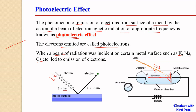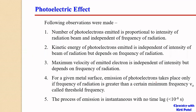There were certain observations made during the photoelectric effect experiment. The first observation was that the number of photoelectrons emitted is proportional to the intensity of the radiation and is independent of the frequency of the radiation.